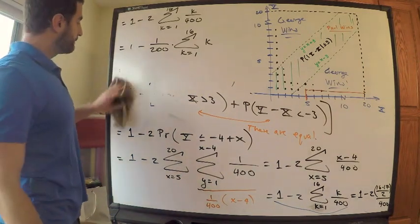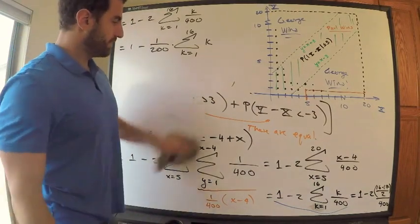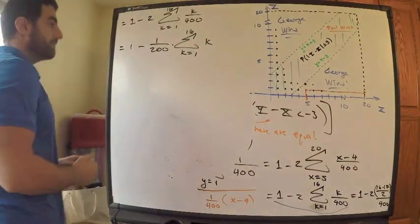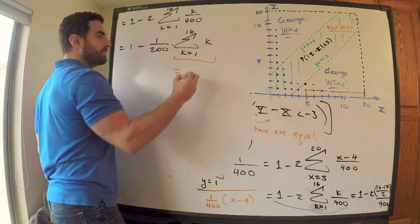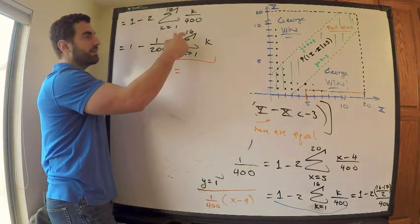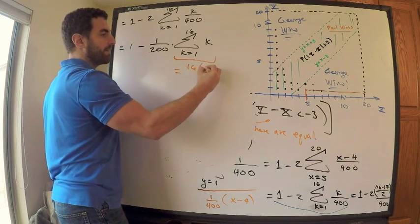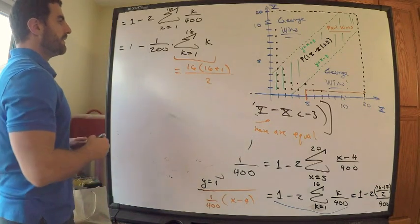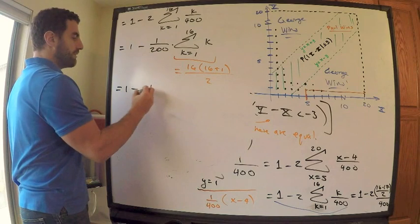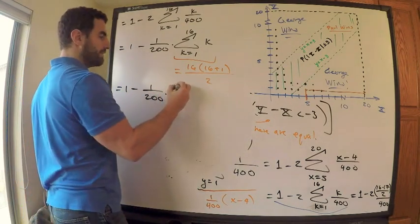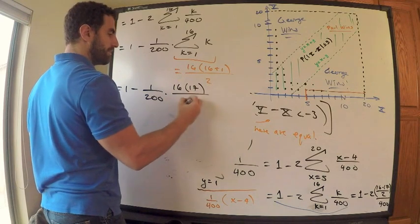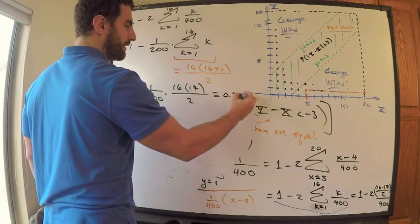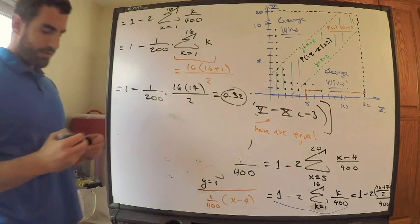To add this up, you should know the formula for this. Very easy to prove it actually, just a little fancy trick. This right here is equal to the top sum and the top bound 16 times 16 plus 1 divided by 2. That's what I utilized there. So meaning that my answer is 1 minus 1 over 200 times 16 times 17 divided by 2, which you should get is 0.32. This is the probability that Paul wins.